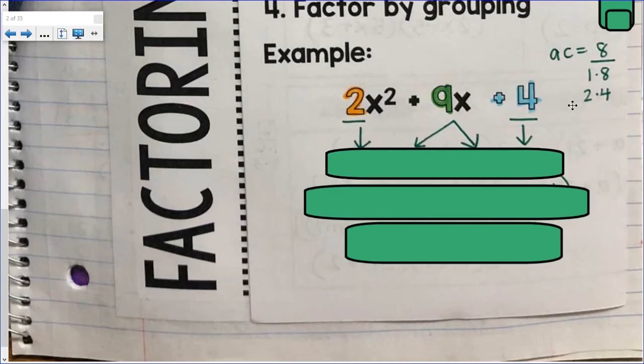I need to determine which factor pair of 8 is going to give me a sum of 9. Will it be 1 and 8, or 2 and 4? I think the pretty obvious answer here is 1 and 8, both positive. I need positive 1 and positive 8 to multiply to get 8. I need them both to be positive to add up to 9.